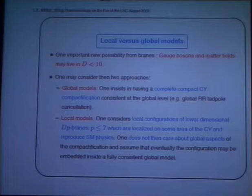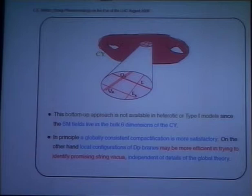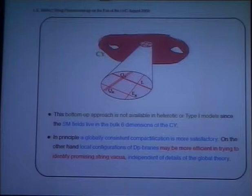This bottom-up approach was not available in the heterotic and type I models, since the standard model fields live in the bulk of the Calabi-Yau. In principle, a globally consistent compactification is more satisfactory. On the other hand, it could be less efficient in trying to identify vacua which resemble the standard model.